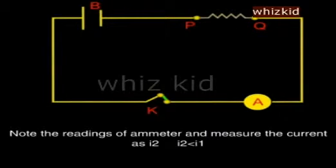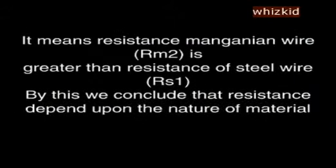I2 is less than I1. It means resistance of manganin wire is greater than resistance of steel wire.